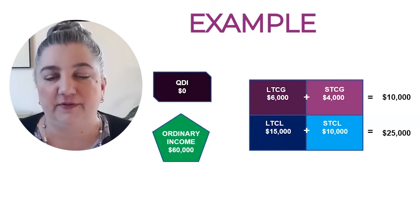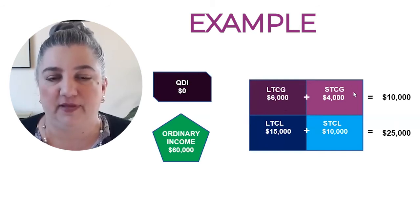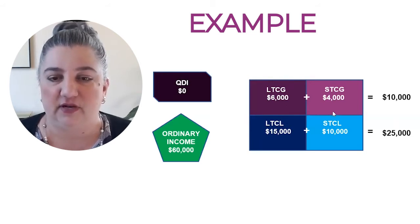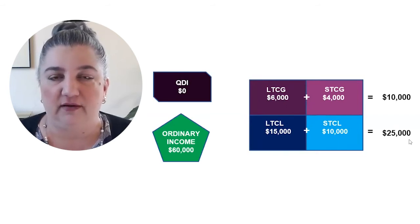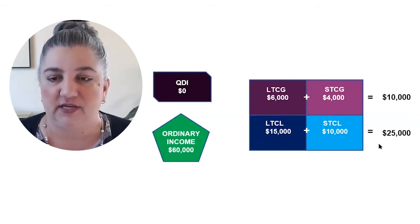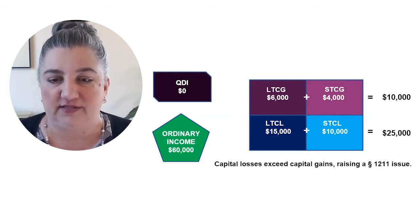Let's turn to an example. Here I've filled in the boxes on the grid: $6,000 of long-term capital gain, $4,000 of short-term capital gain, $15,000 of long-term capital loss, and $10,000 of short-term capital loss. Adding across the bottom, there's $25,000 of capital losses. Adding across the top, there's $10,000 of capital gains. So capital losses exceed capital gains, raising a limitation on capital losses issue.